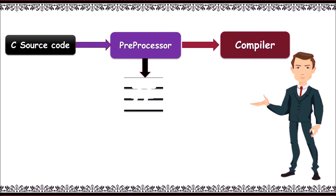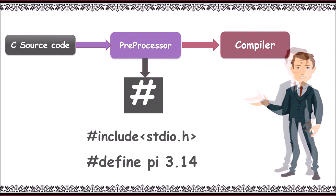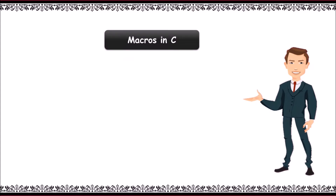The preprocessor is denoted by the hash symbol in C. So when we write #include stdio.h it pastes the code of the given file into the current file, and #define allocates the value 3.14 to PI.